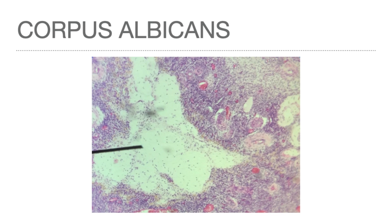The corpus luteum of menstruation regresses in nine days with the absence of fertilization. Its lutein cells undergo apoptosis and macrophages invade and phagocytize the cells. A pale-staining fibrous scar at the site of the corpus luteum, called the corpus albicans, forms and persists for several months.